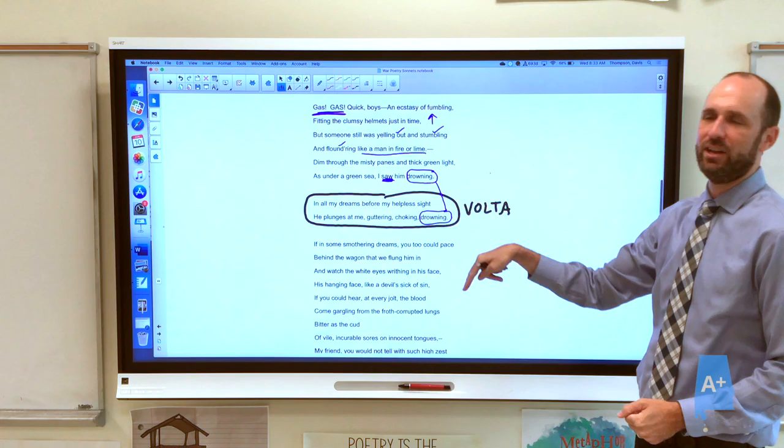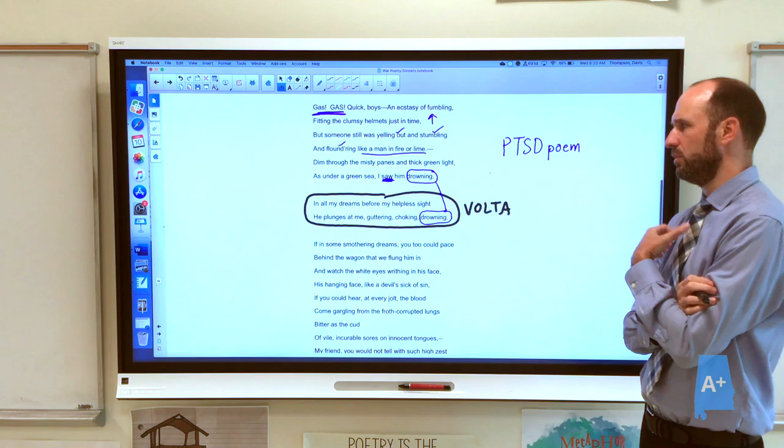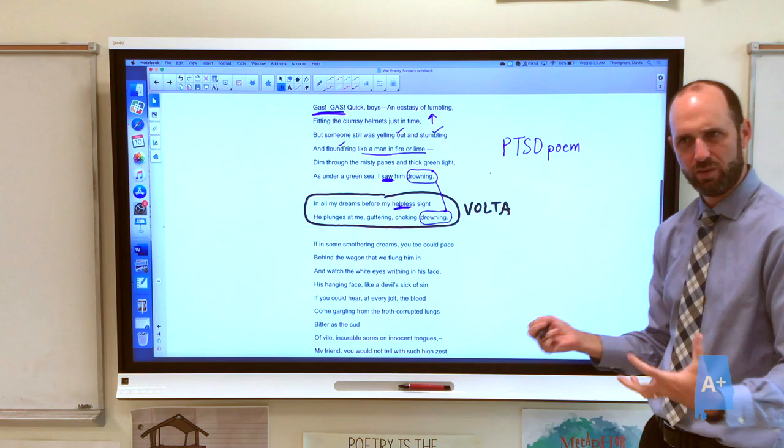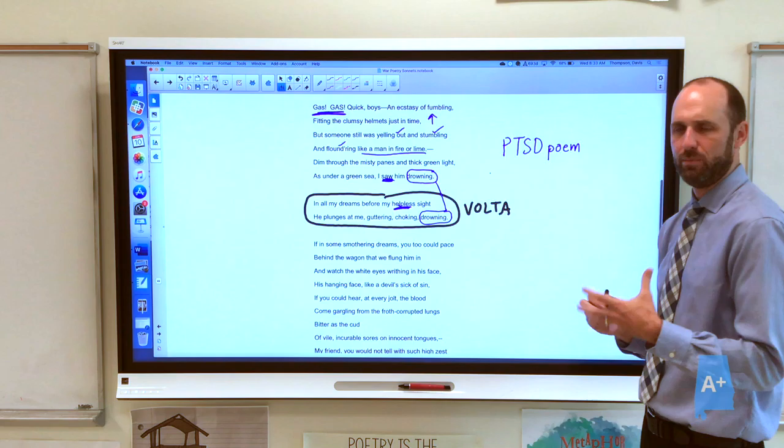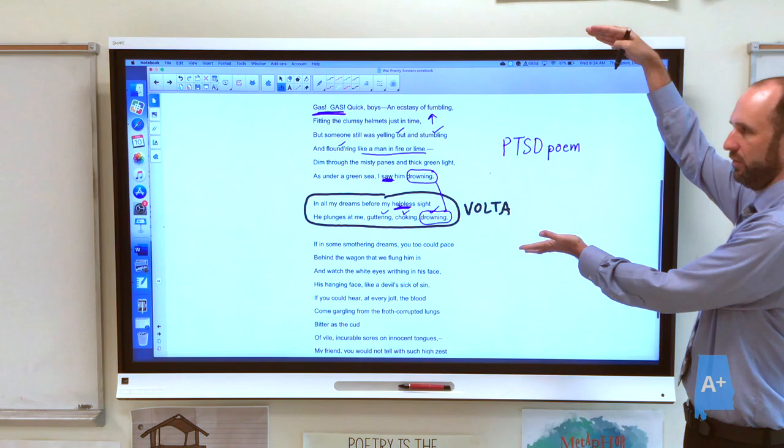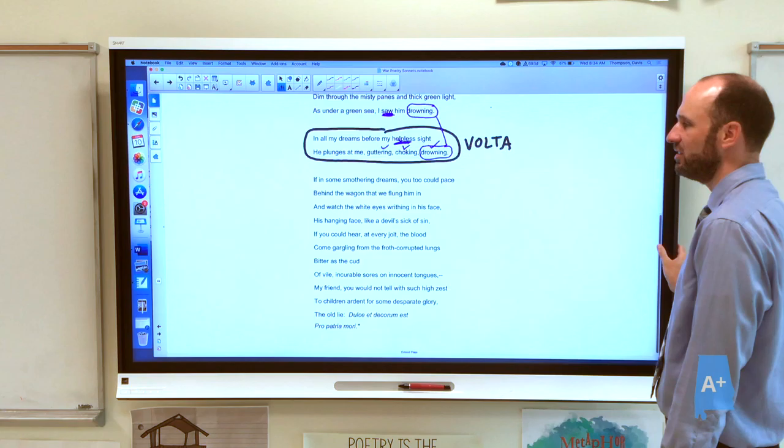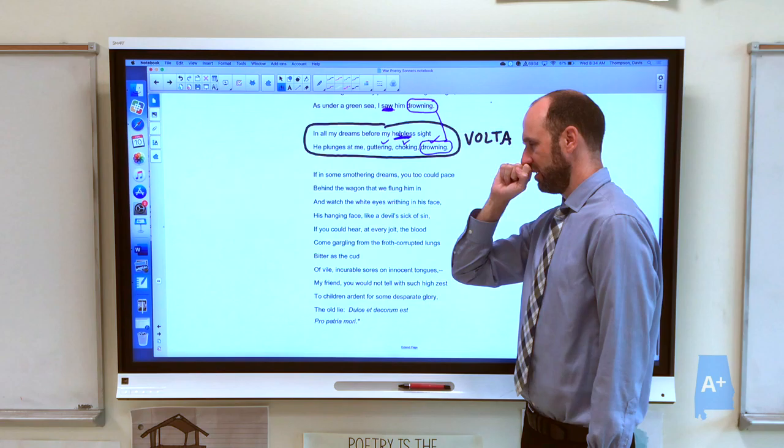He says, in all my dreams. This is what we would probably typically say a PTSD poem. This is a post-traumatic stress disorder poem. That he is like, even when he sleeps in all his dreams before my helpless sight, there's nothing I can do. That idea of helpless really adds to the power of the noun sight. In all my dreams before my helpless sight, he plunges at me. Notice this is present tense. He plunges at me, guttering, choking, drowning. Three terrible verbs, right? That's kind of the story part of the poem. It gives us a setting and a scene and something that happens. And this is the present tense. I'm still haunted by him. And then the poem changes quite a lot because he addresses someone.